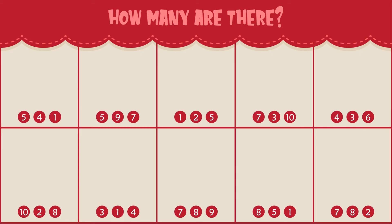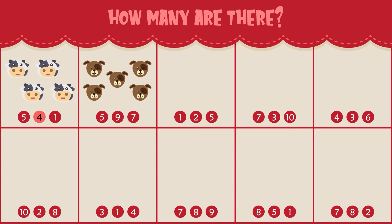Hey, Sprouts. Today we are counting farm animals. Let's count and see how many there are. How many cows do you see? There are five dogs. How many ducks do you see? There are two ducks.